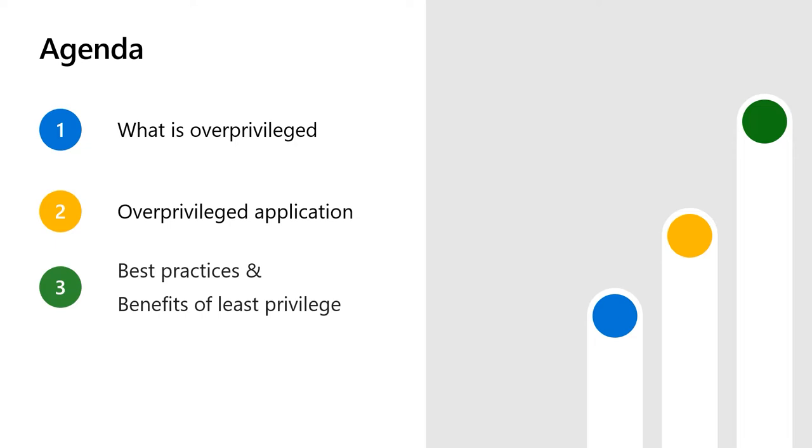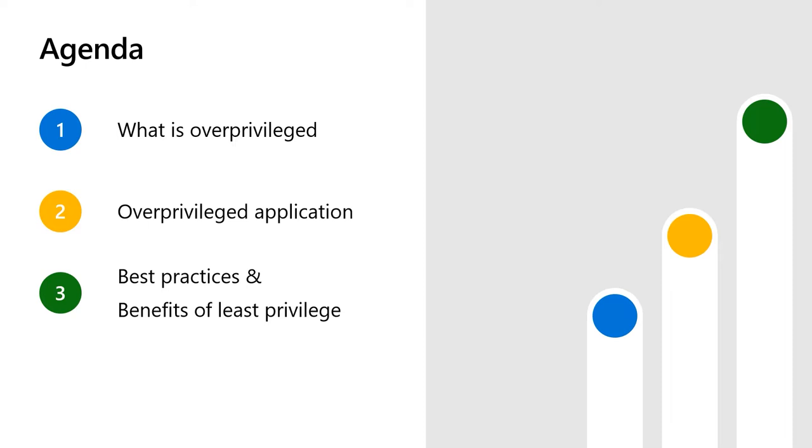Hi, everyone. My name is Yushin Ko, and I'm a program manager in the Microsoft Identity and Network Access Organization. In my role, I focus on a feature that helps developers make secure applications by limiting the permissions their application requests and are granted. In this video, I will explain why applications should not request more permissions than they need, introduce the term overprivilege, explain what it means, and provide tips for limiting privilege when it comes to your applications.